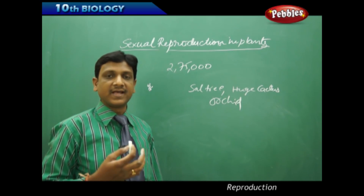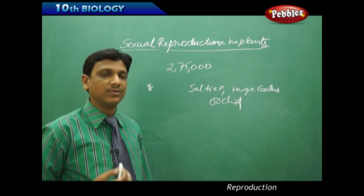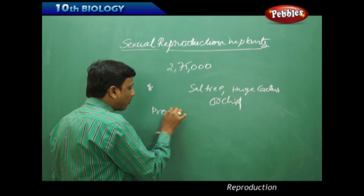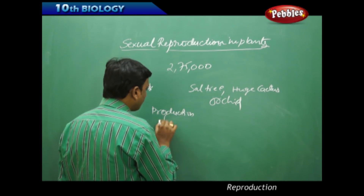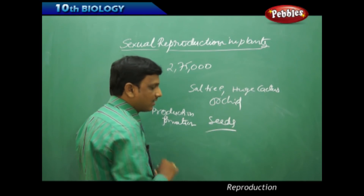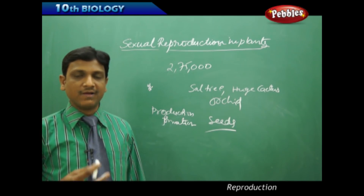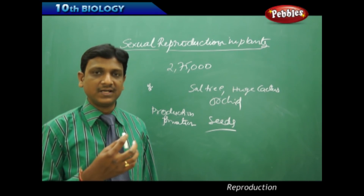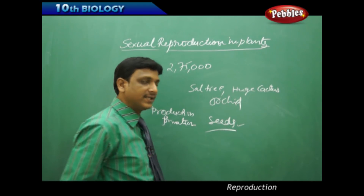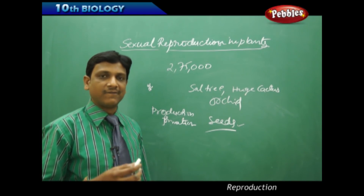Now let us understand the mechanism of reproduction — how the young ones, specifically the seeds, are produced. In sexual reproduction, production or formation of seeds is one important aspect. Most seeds are enclosed in the ovary, which forms the fruit. A fruit bears seeds, and we know the flower after fertilization turns into a fruit. The seeds contain the baby plant called the embryo, and the seed becomes a new plant after germination.